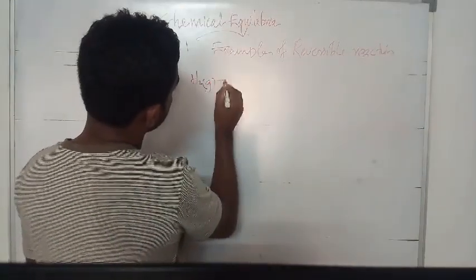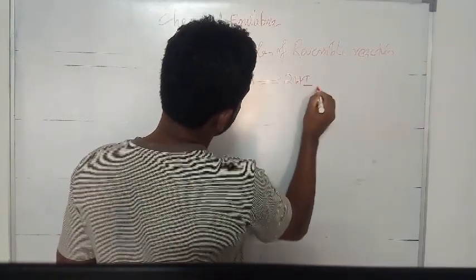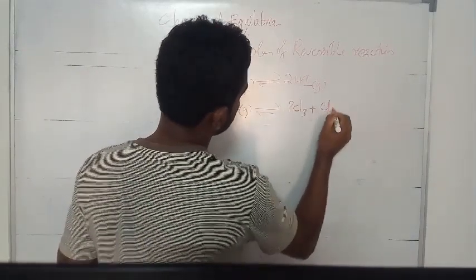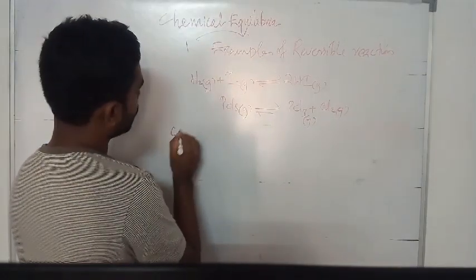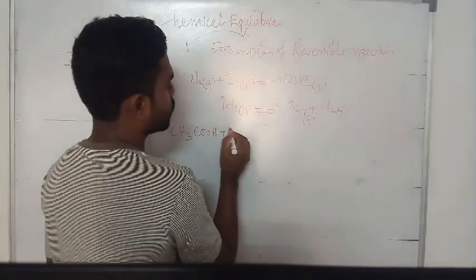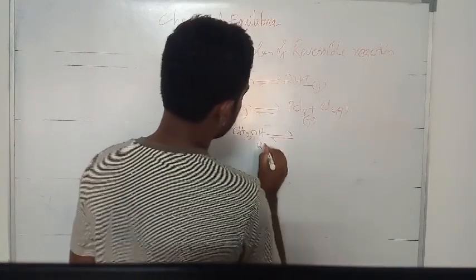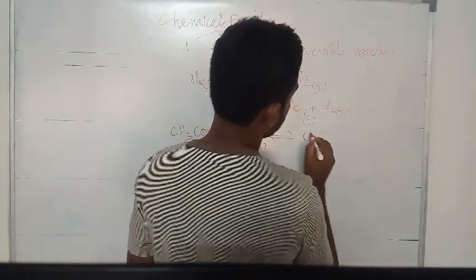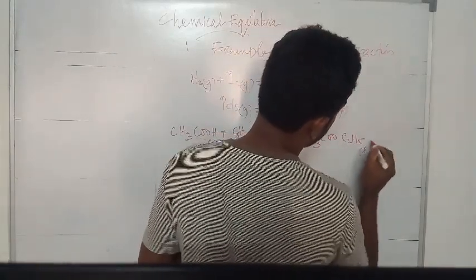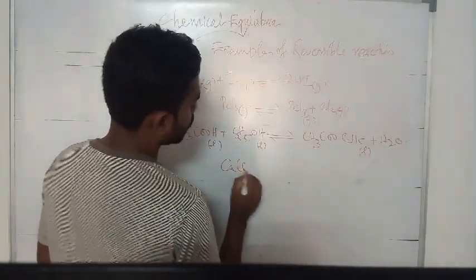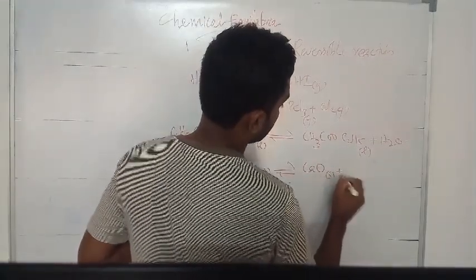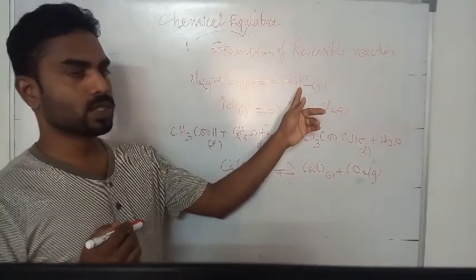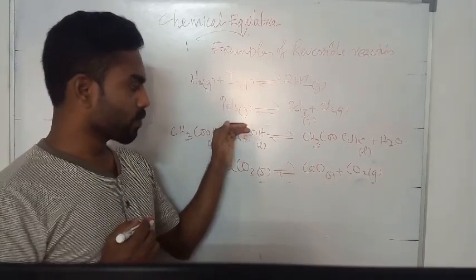Examples of reversible reactions: H₂(g) + I₂(g) ⇌ 2HI(g); PCl₅(g) ⇌ PCl₃(g) + Cl₂(g); CH₃COOH + C₂H₅OH ⇌ CH₃COOC₂H₅ + H₂O (esterification); CaCO₃(s) ⇌ CaO(s) + CO₂(g).